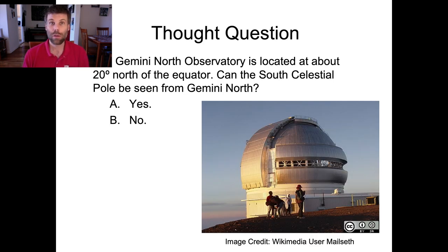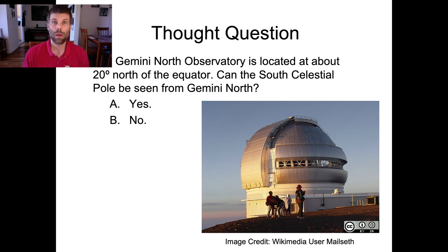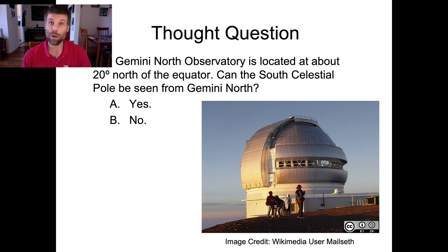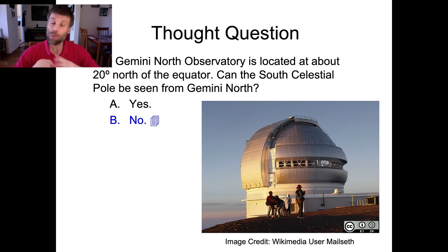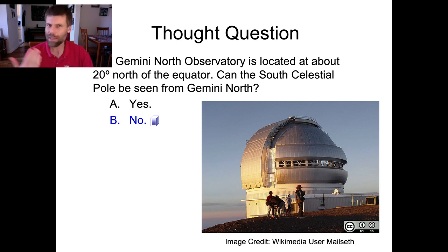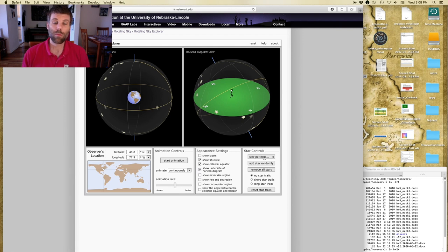Let's think about an application for how we might use the sphere. Let's consider Gemini North Observatory, which is located in Hawaii. Hawaii is at a latitude of about 20 degrees north, so it's north of the equator. Let's think whether the South Celestial Pole will be visible from Gemini North Observatory — and the answer is a resounding no. If you're at this telescope, you cannot see the South Celestial Pole, so a star or planet or galaxy near the South Celestial Pole will be out of the range accessible by your telescope. Let's use this simulator to answer why.